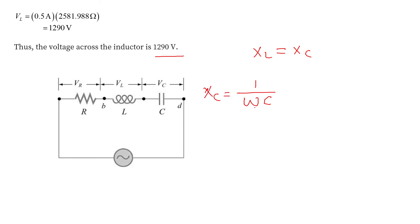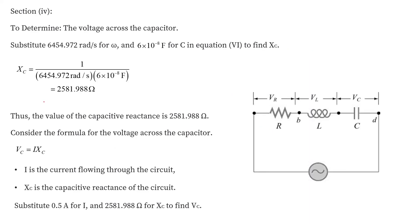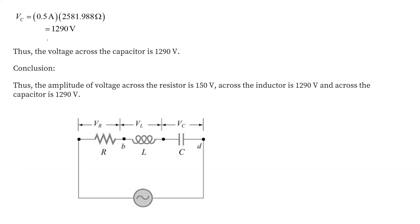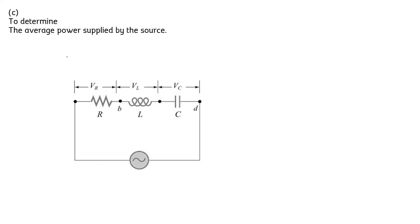To confirm, XC = 1/(ω·C) = 2581.988 Ω. Multiplying by the current I gives the voltage across the capacitor: I·XC = 0.5 × 2581.988 = 1290 V. So the voltage across the resistor is 150 V, while the voltage across both the inductor and the capacitor is 1290 V.